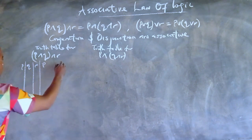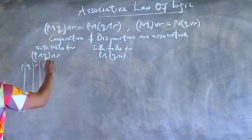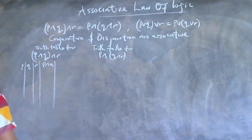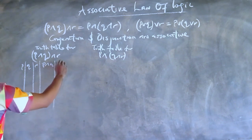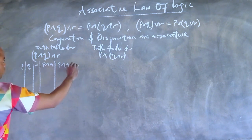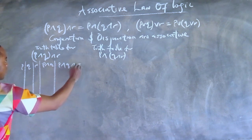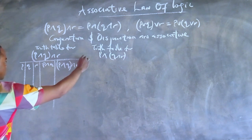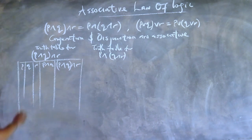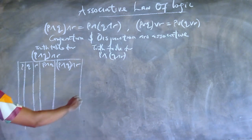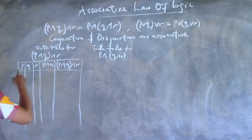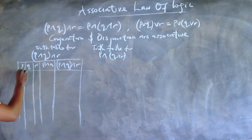For the first table, we need P, Q, R. We need P and Q, and finally the compound statement in question: (P and Q) and R. Because we have three simple statements, we are going to have eight possible conditions.